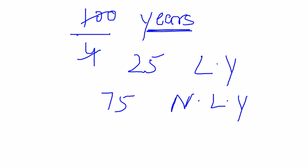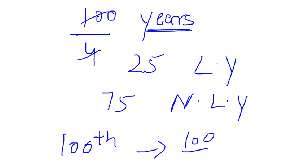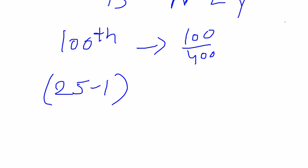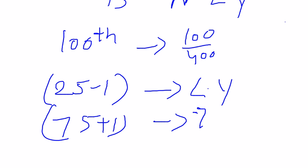But wait — as discussed in the previous video, a century year has an exception: we check it by dividing by 400. The 100th year divided by 400 gives a non-zero remainder, so the 100th year is a non-leap year. Therefore there are 25 minus 1 = 24 leap years, and 75 plus 1 = 76 non-leap years in these 100 years.